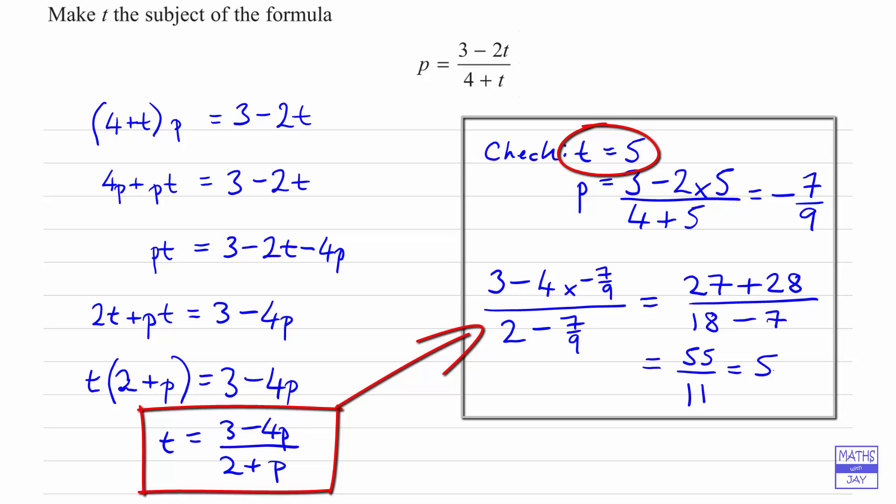So that looks as if we have got the right answer, because we can see that when we put p in as negative 7 ninths, t does come out to be 5, as we'd hoped.